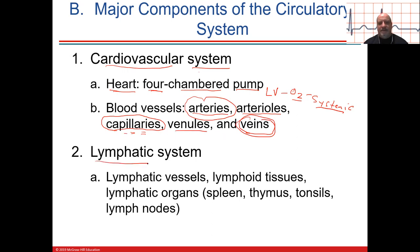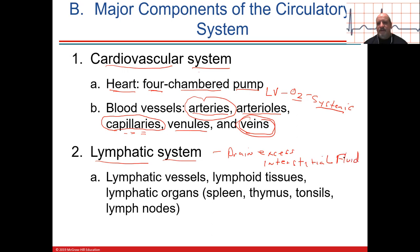The lymphatic system is part of the cardiovascular circulatory system. It basically drains excess interstitial fluid — meaning fluid between the cells, like extracellular fluid. Without the lymphatic system, we'd have edema, swelling in the tissue.